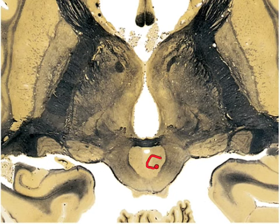We also have the periaqueductal gray, which is going to be located right here, by the cerebral aqueduct right here. The periaqueductal gray is involved in descending modulation of pain, and it's located just outside the cerebral aqueduct, which is that little white spot right there.